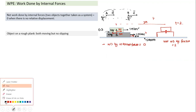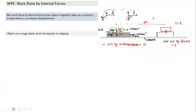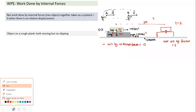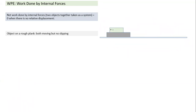Now let's take a different case — still 2 kg on top and 4 kg below, μ = 0.2 — but now we apply a force of 18 N. If I take them together, acceleration would be 18/6 = 3 m/s². But the top block can have a maximum acceleration of 2 m/s² due to friction, so slipping will occur.